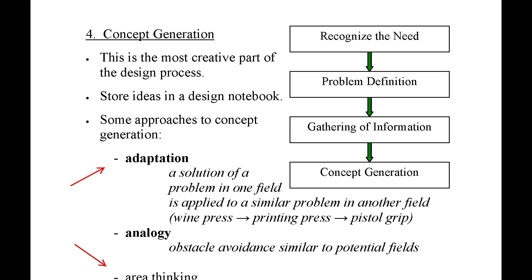The fourth step in the design process is concept generation. This is one of the most creative parts of the design process and, in turn, one that many enjoy the most. There are many ways to approach this exercise. Adaptation, for example, is applying a solution to a problem in one field to a new application. The example provided is a printing press which required an ergonomic handle for the operator — so instead of coming up with a new idea, they adapted one that was used centuries earlier in the production of wine.